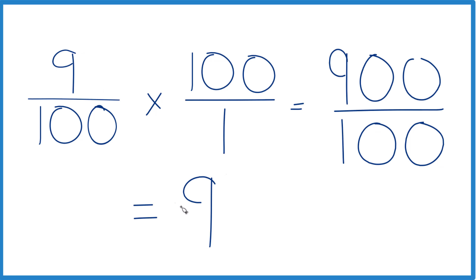So 9% of 100, you end up with 9 here. You could take and divide 9 by 100, get a decimal, and then multiply by 100, and you'd end up with 9 as well. It's another way to do it.